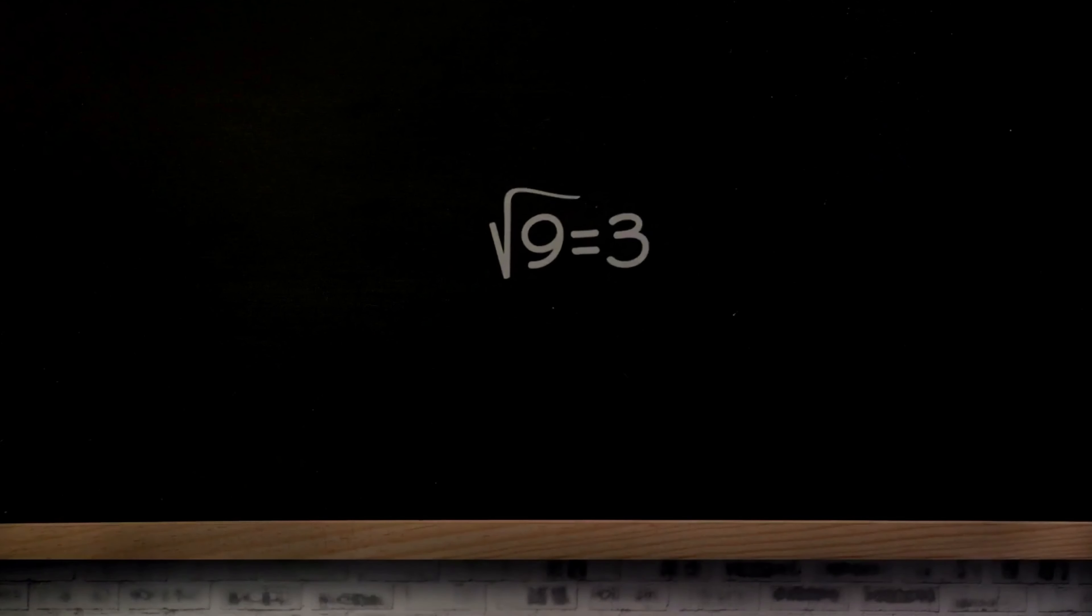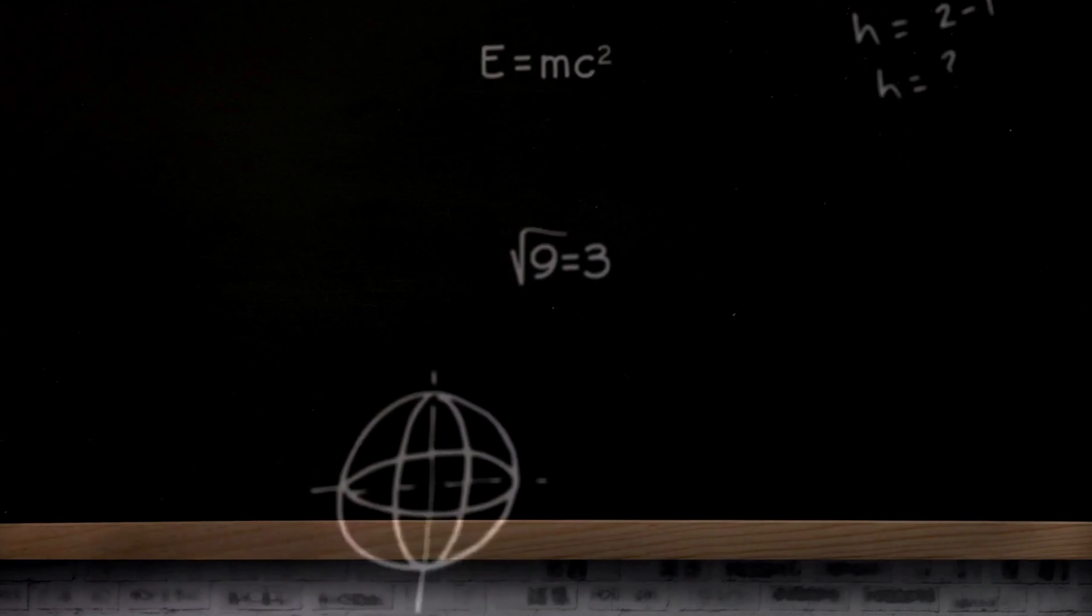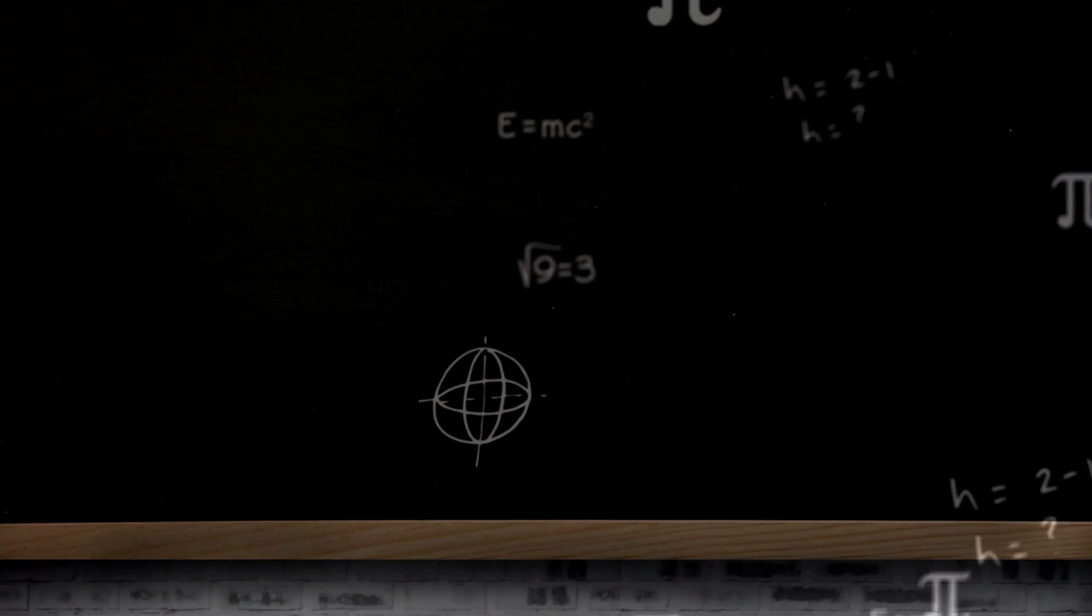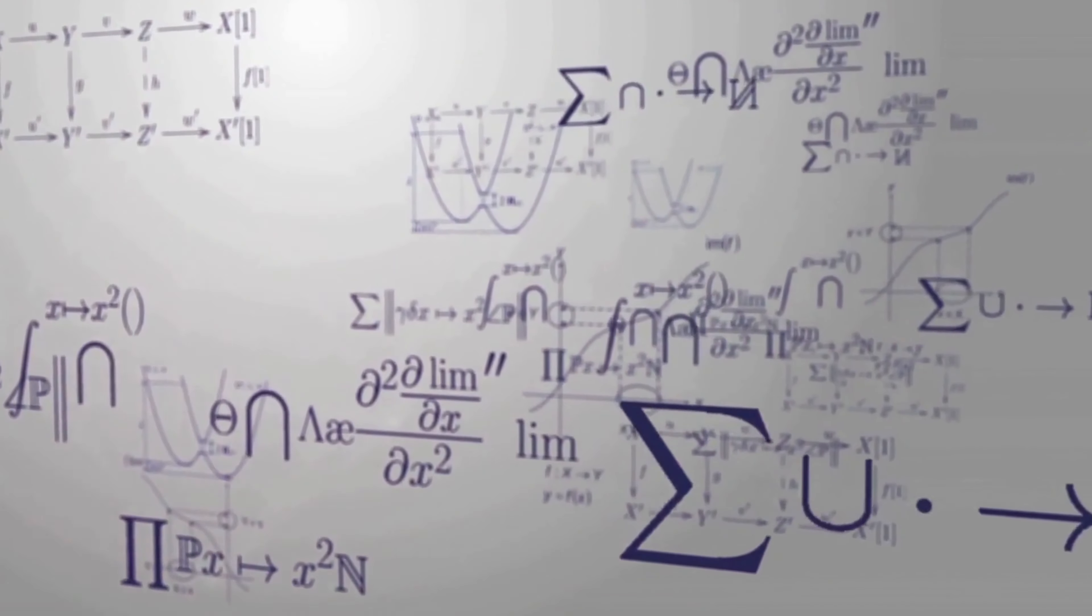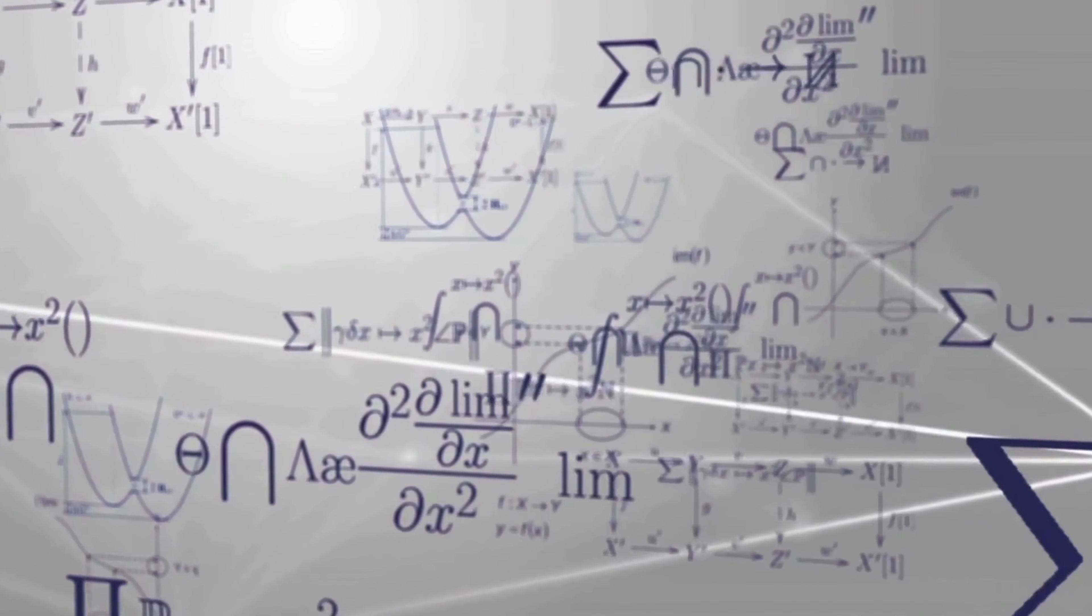Did you know that 99.7% of data points fall within three sigmas of the mean in a normal distribution? That's right folks, the humble sigma, a term you might have encountered in your high school statistics class, holds a surprising amount of weight in the world of data.